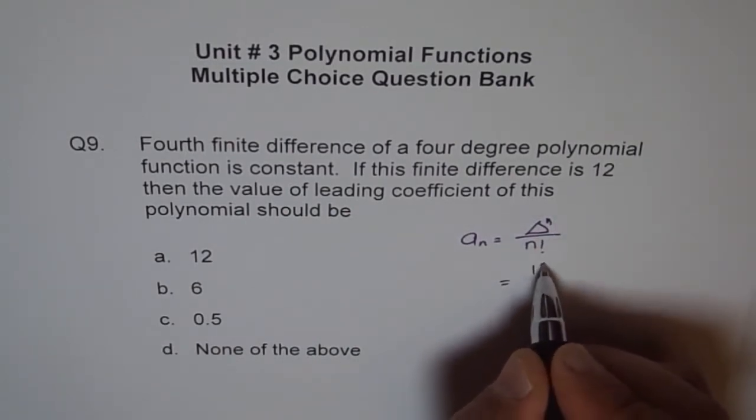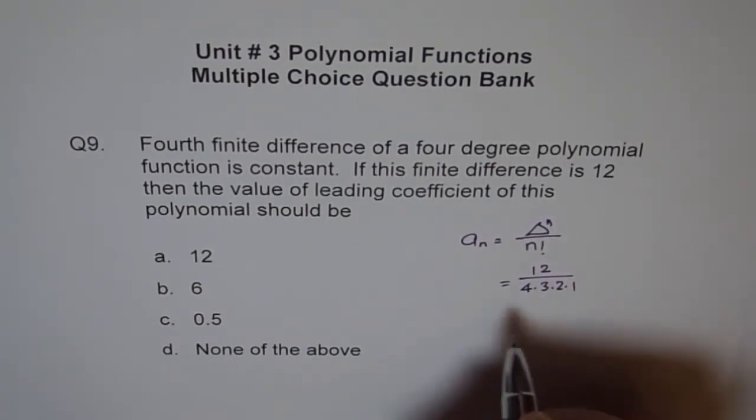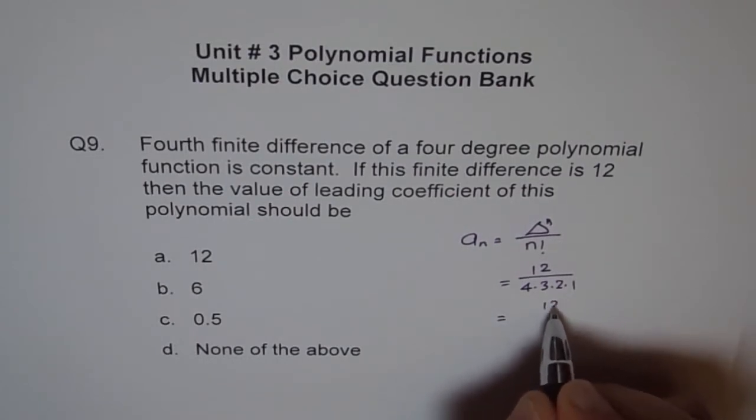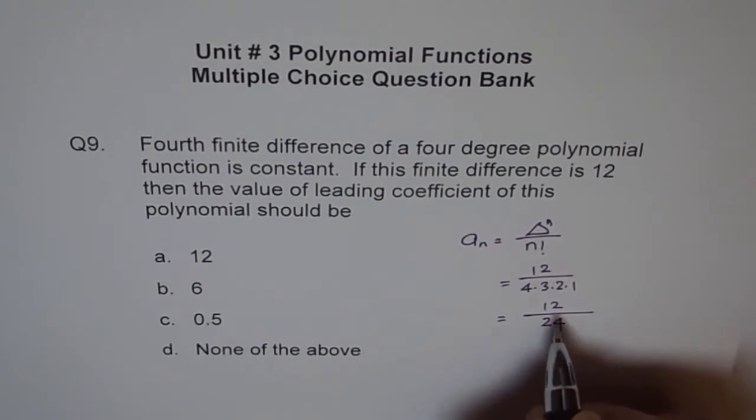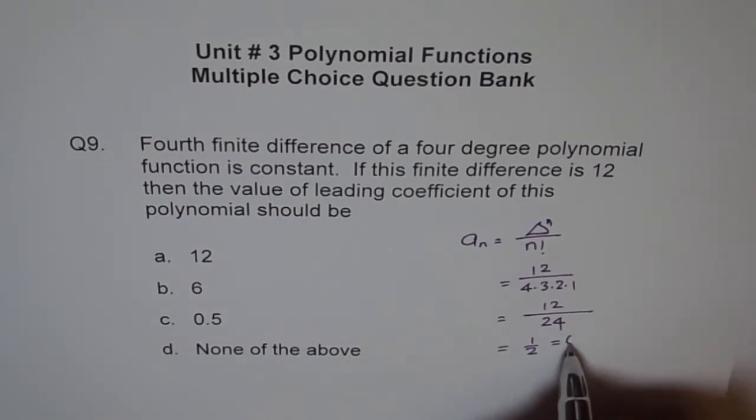So it is 12 and n factorial is 4 times 3 times 2 times 1, correct. So let's calculate this. It is 12 over 4 times 3 is 12, 12 times 2 is 24. And this can be simplified as 1 over 2, which is option C: 0.5.